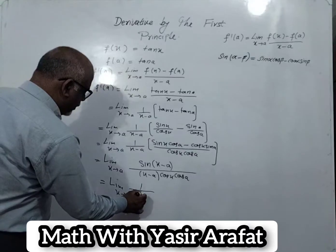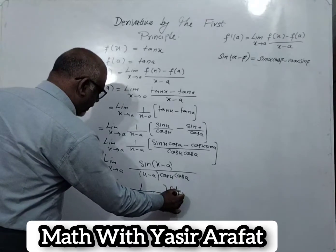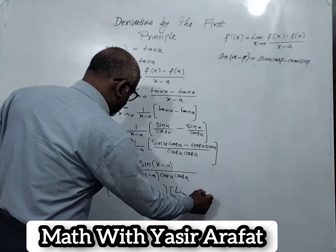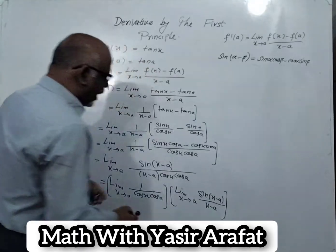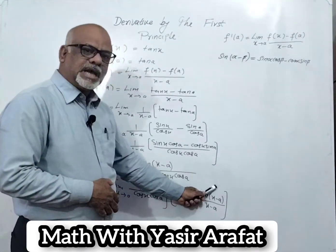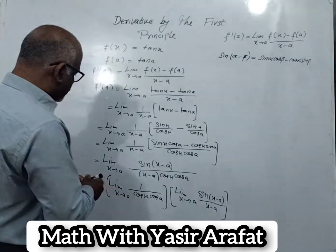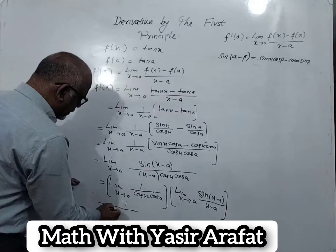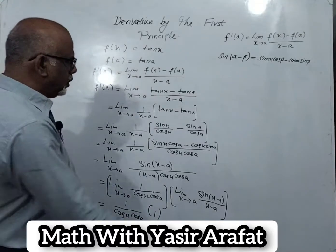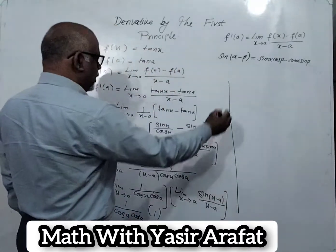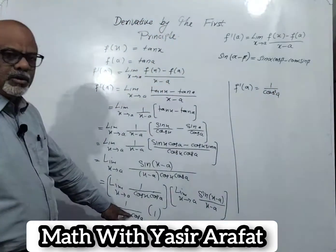Separating the limit: limit x tends to a of 1 over (cos x cos a), and limit x tends to a of sin(x minus a) over (x minus a). This again becomes the sandwich theorem — sin theta over theta — and with the limit applied, this factor equals 1. So applying the limit x equals a, we get 1 over (cos a times cos a), which is 1 over cos squared a.